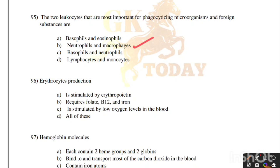Erythropoiesis is stimulated by erythropoietin, requires folate, B12 and iron, is stimulated by low oxygen levels in the blood. Correct answer is option D, all of these.